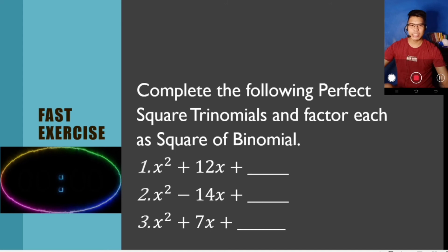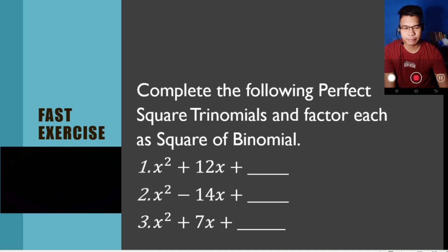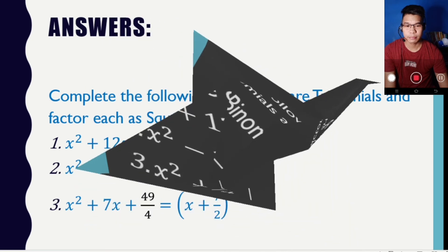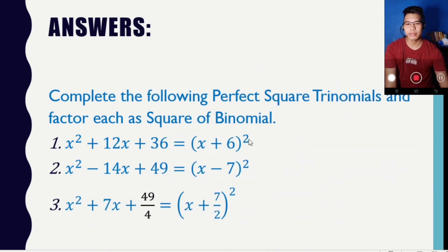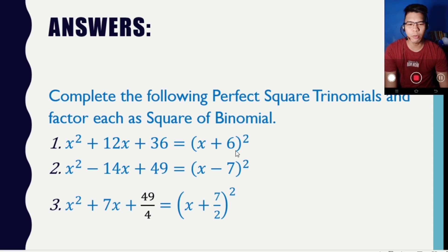Okay, we're going to reveal the answers for this fast exercise. For number one, x squared plus 12x plus 36, the equivalent square of binomial is quantity x plus 6, quantity squared.